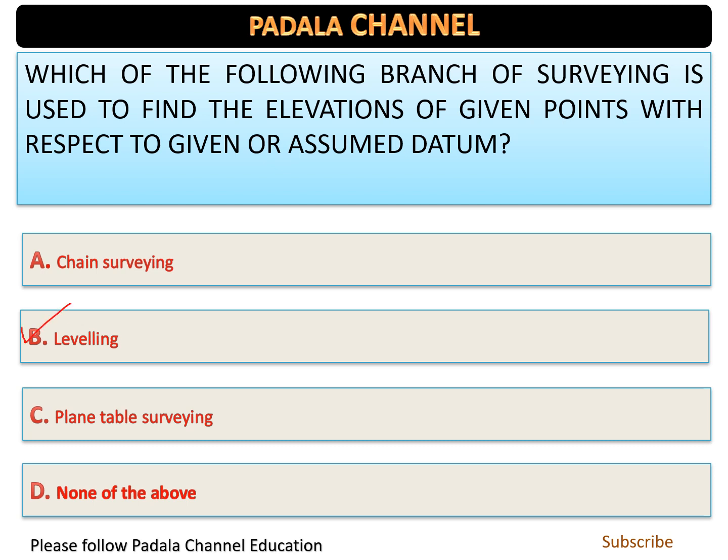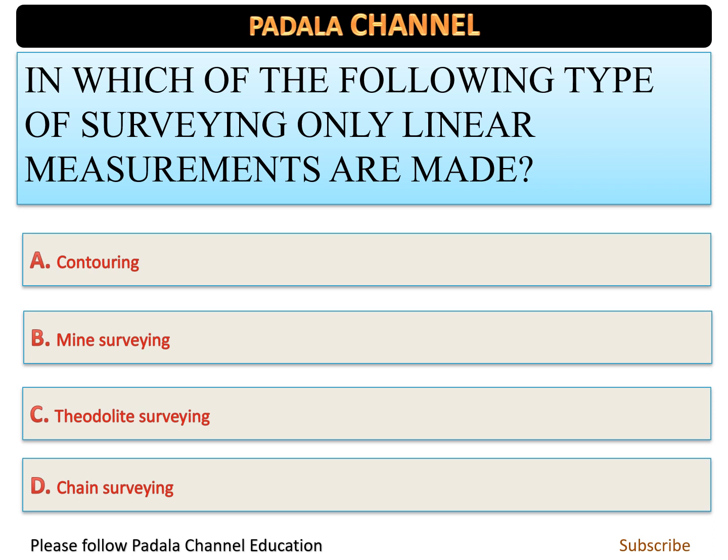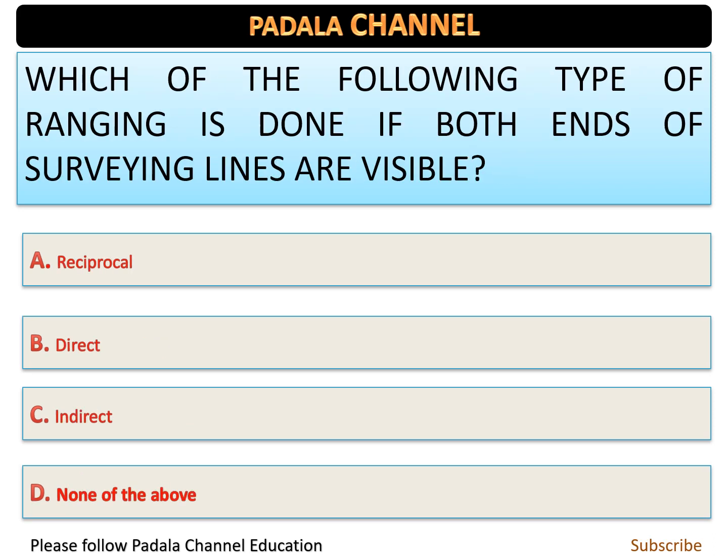In which of the following type of surveying are only linear measurements made? This is a simple, straightforward question. The answer is option D — chain surveying is the right answer.